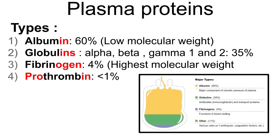Plasma proteins. There are four types of plasma proteins. Albumin, which constitutes 60%, has a low molecular weight. Globulins, which consists of alpha, beta, and gamma globulins 1 and 2, constitutes 35%. Fibrinogen, which constitutes 4%, has the highest molecular weight. And prothrombin, which constitutes less than 1%. The suffix -in means protein, so albumin means white protein.